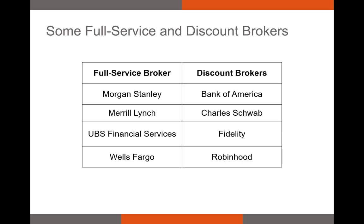Here's a list of brokers by type. Some of the biggest banks in the US are full service brokers, and have been since the passage of the Financial Services Modernization Act in the 1990s. Popular discount brokers include Fidelity, Robinhood, and Bank of America. Personally, pretty much all of my accounts right now are in Fidelity — retirement accounts, joint accounts, and so on. I actually recommend that as a student you open a brokerage account with one of the discount brokers.